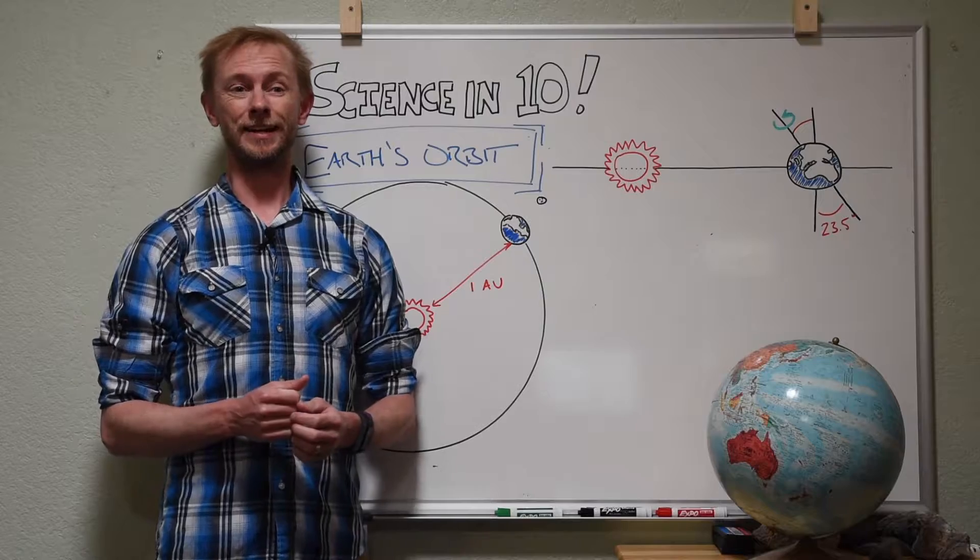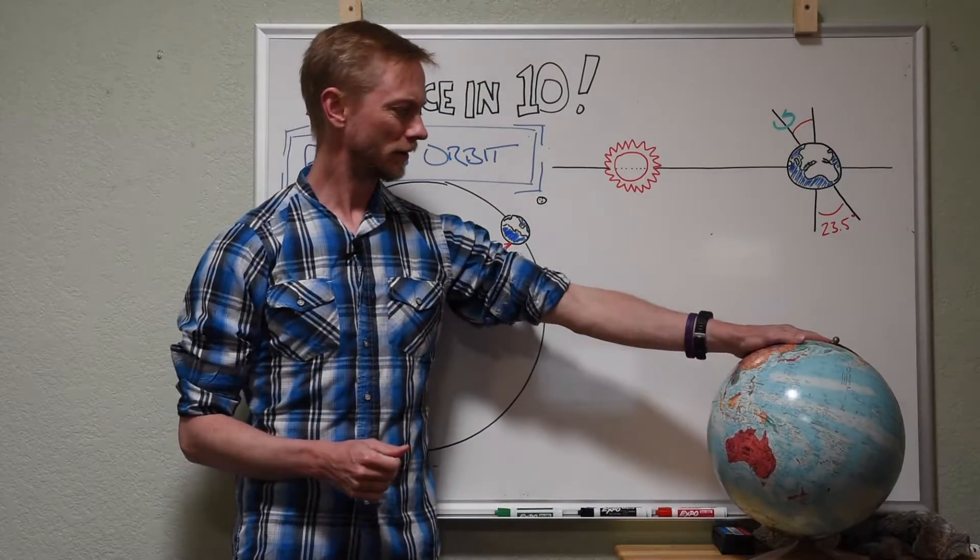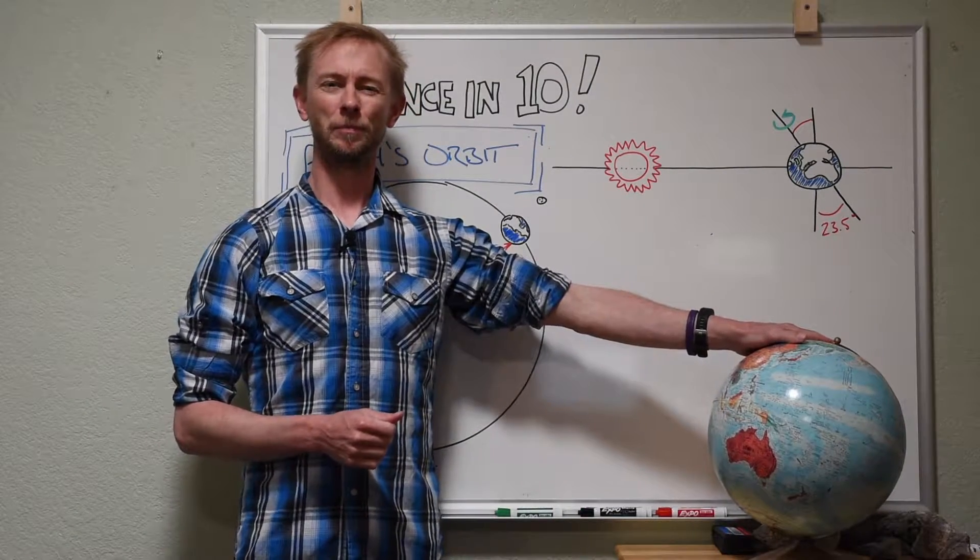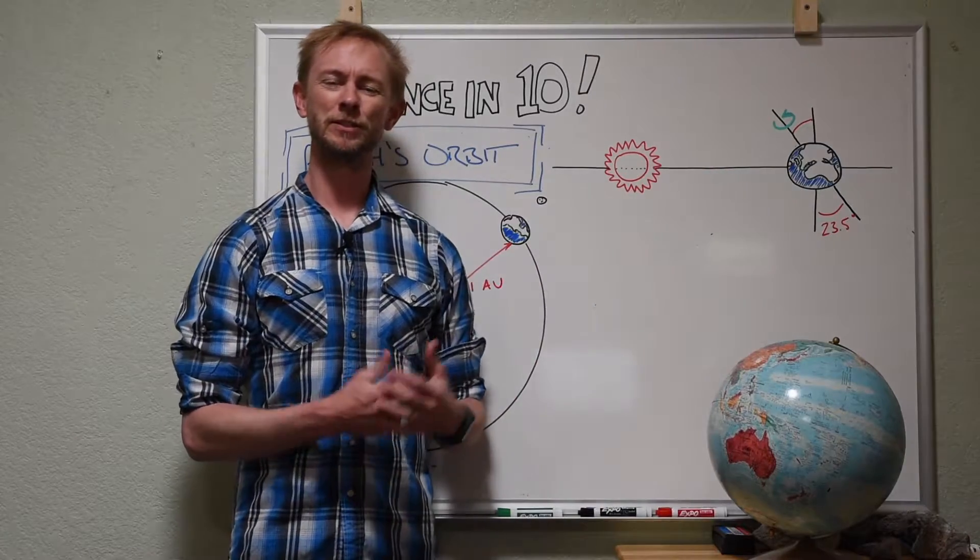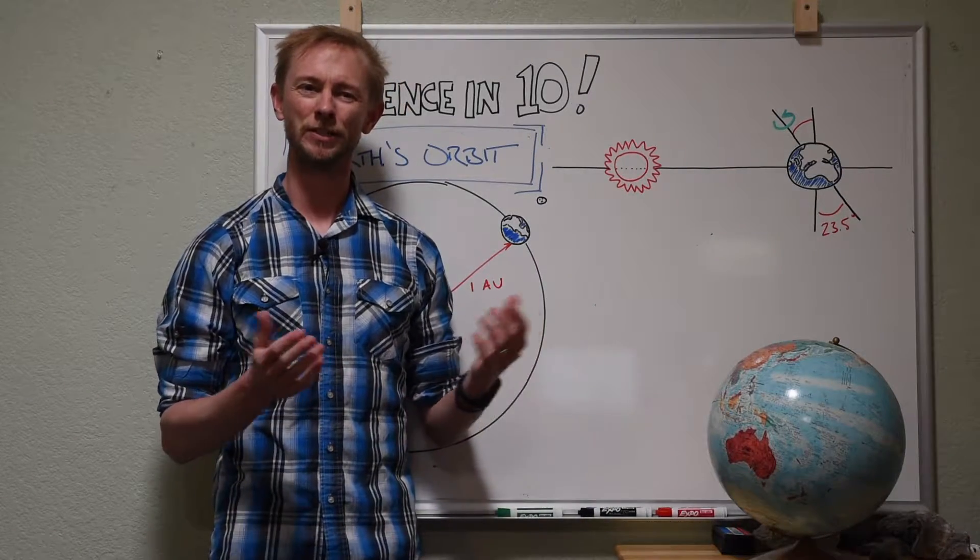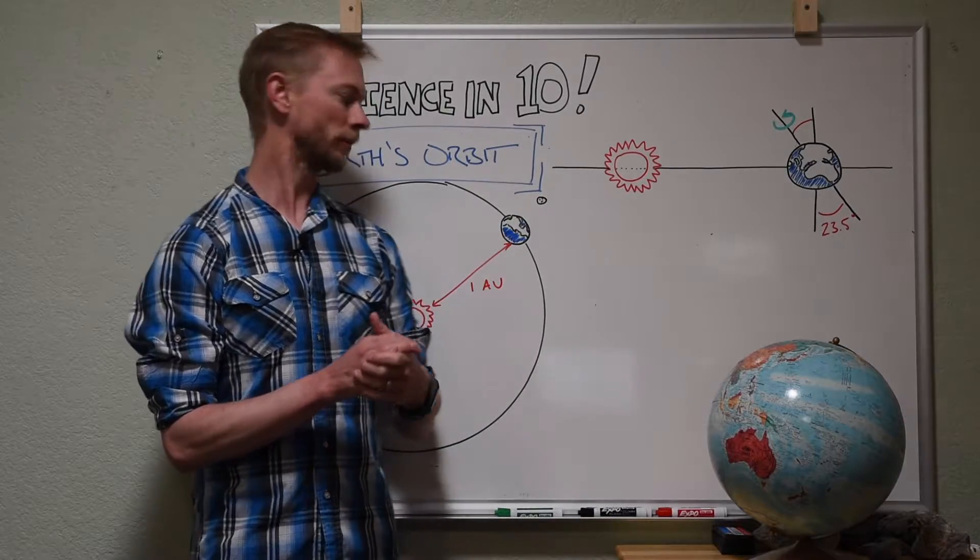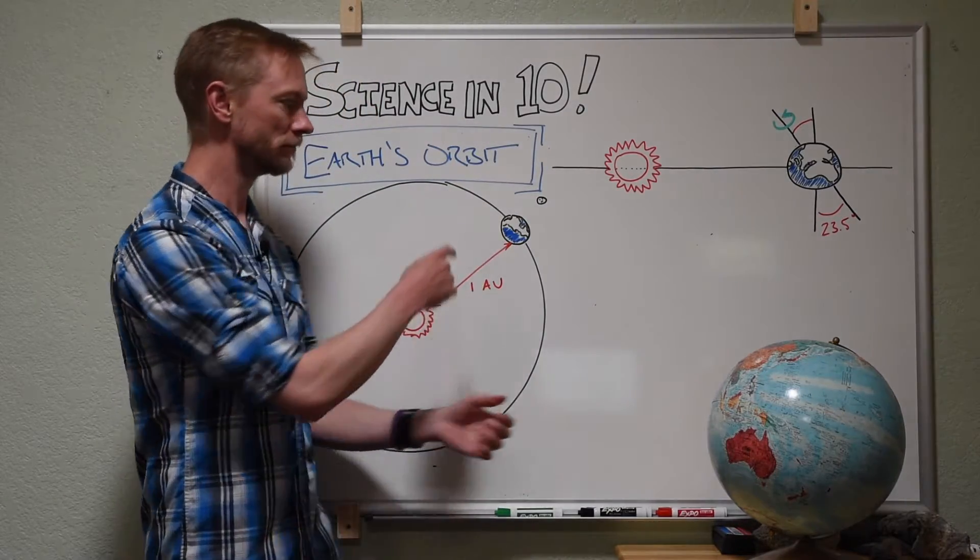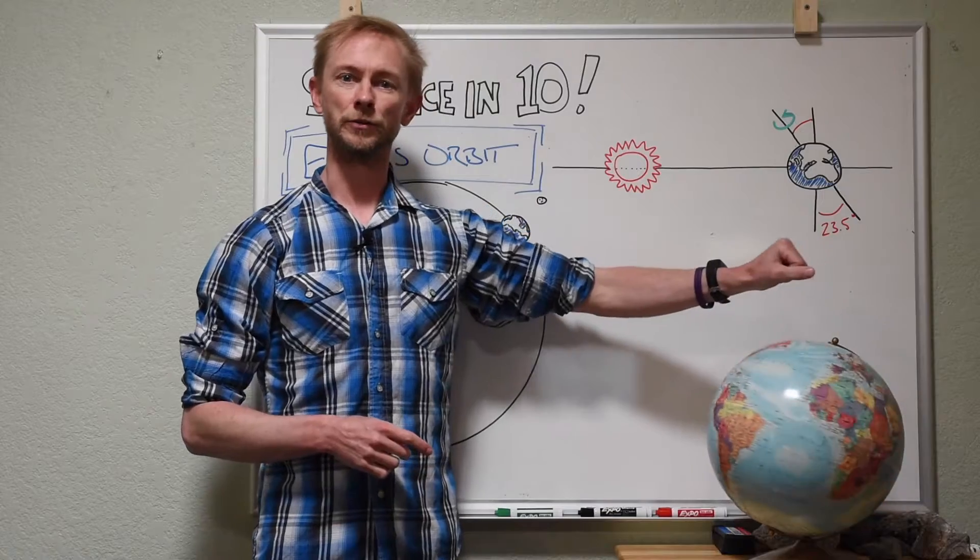Hey everyone, welcome back to Science in 10. So here we are on spaceship Earth. But what does our journey through space look like? And how does this journey affect our lives on a seasonal basis? To explain, let's take a look at our planet's orbit around the sun and its rotation.